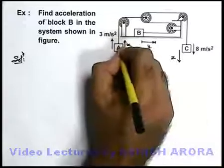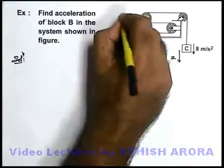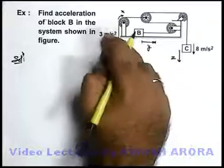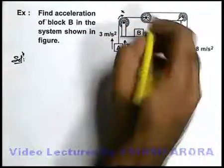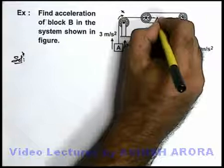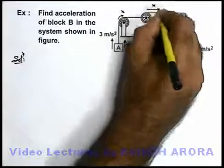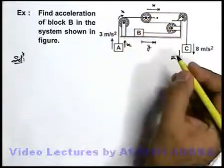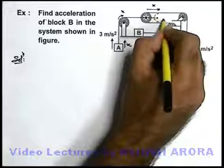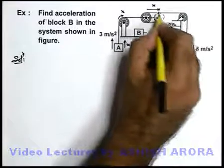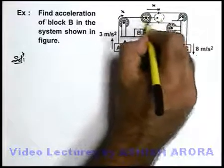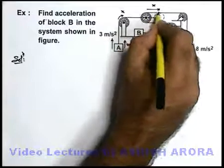So we can see if A is going up by x, this string will be shifted by a distance x from this vertical part to horizontal part. So this pulley will also shift toward right by a distance x as it is connected to the string. So if this pulley reaches this position, you can see in this string this length x plus x, 2x, will get loose.